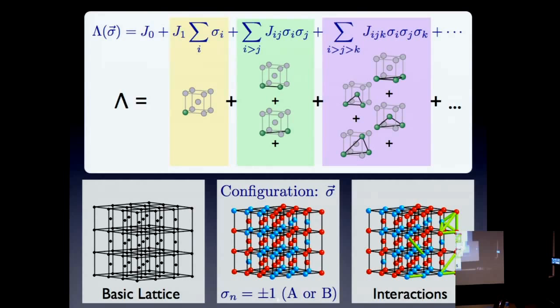The way we address the question of where the atoms sit is with something called the cluster expansion — a mathematical expansion. If you're an experimentalist using Raman spectroscopy, you probably use Fourier series and represent things as sines and cosines. It's essentially that kind of idea: we take a crystal and represent it in little clusters. The clusters become the terms in our math, with coefficients in front. If we get those coefficients right, we can compute things really rapidly. The problem is we have no idea what the coefficients are — so it's cute math but kind of worthless by itself.